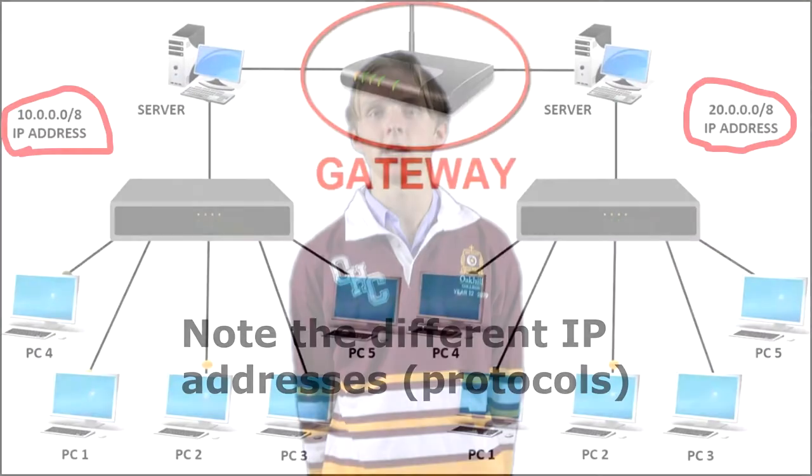A gateway is extremely similar to a bridge in that it is able to join two different networks together into one larger local area network, or LAN for short. However, what is unique about a gateway is that it has the capability to join two networks which utilize differing protocols, something which a bridge is unable to accomplish. Similar to a bridge, a gateway is simply a combination of both hardware and software.